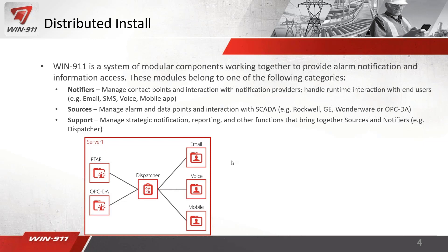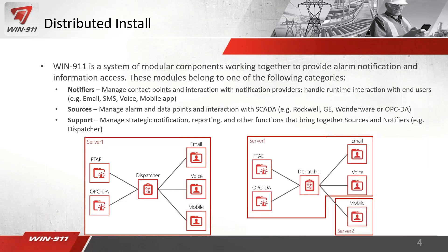In a basic standalone install, Server 1 has everything on it: your SCADA source, dispatcher, email, voice, and mobile — all on the same machine. In a distributed setup, you move one or more of those modules to another machine. For example, you might move the mobile module to a second server if your main network is locked down from the internet, then route mobile hub traffic through that second server which does have internet access.